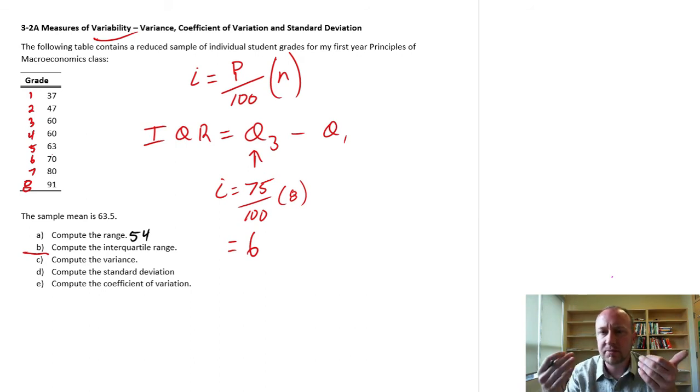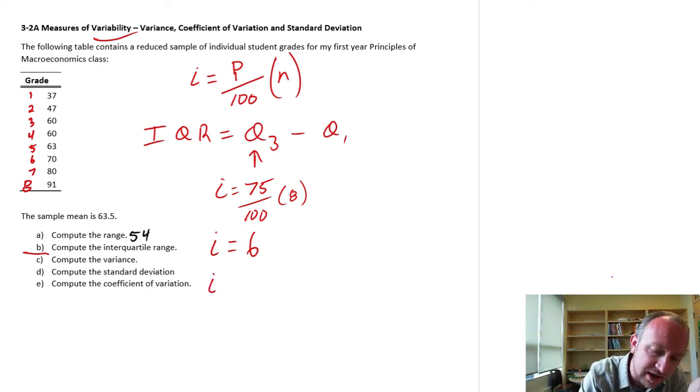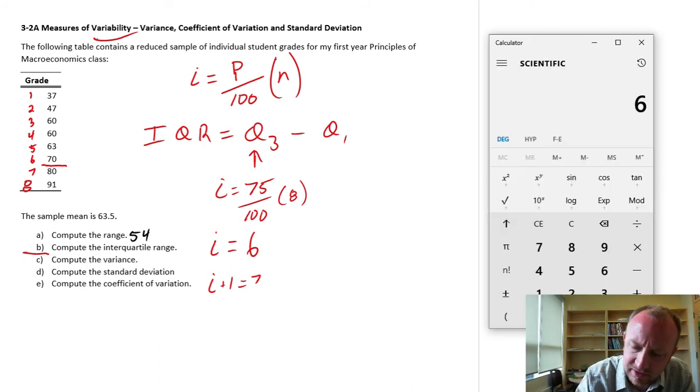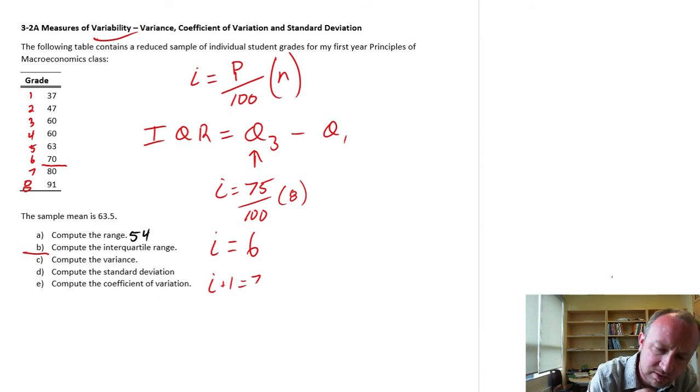But when we're calculating these percentiles, or quartiles, if that index is an integer, so a whole number, then the percentile is the middle between the ith, or in this case the 6th value, and the i plus 1 value, which would, of course, in this case, be the 7th. So my third quartile is going to be that value right in between the 6th and 7th observation. So let's figure out what that is. We can probably do that one in our head: 70 plus 80 divided by, not divided by 5, divided by 2, so 75. So this is 75.